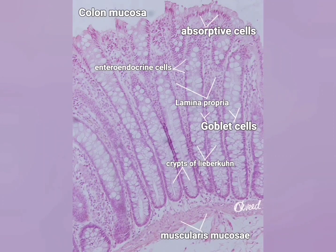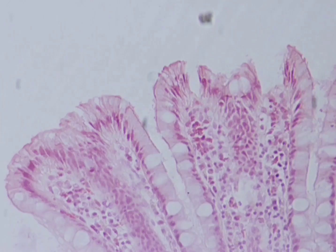The lamina propria is fine connective tissue and it contains diffusely spread lymphocytes as well as lymphoid nodules. The muscularis mucosa is a thin layer of smooth muscles consisting of an inner circular and outer longitudinal layer.